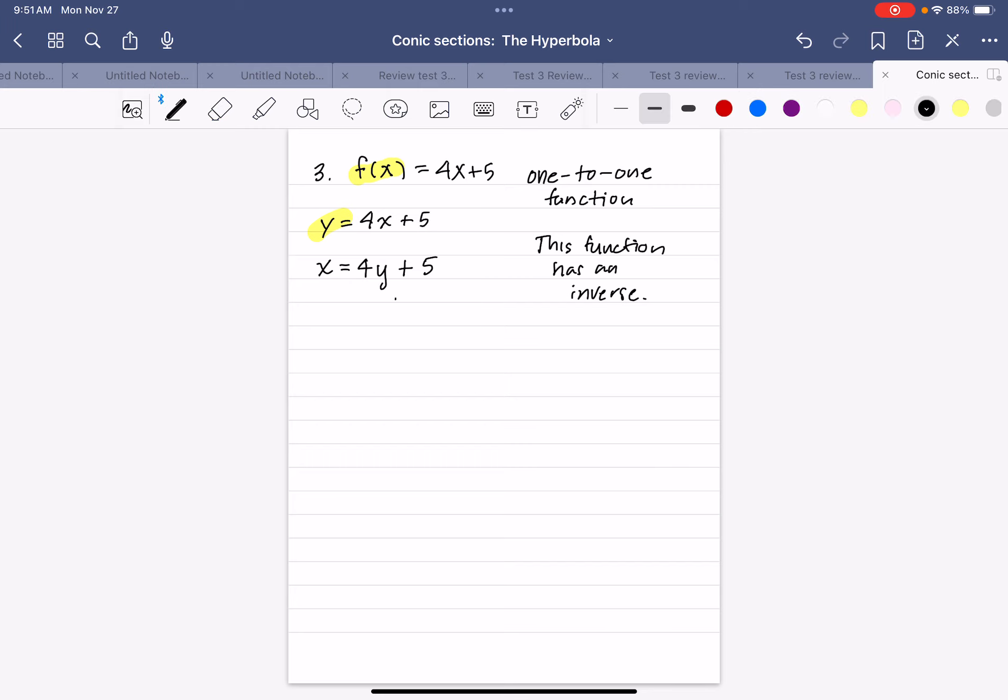Now I'm going to solve for y by subtracting 5, and then I get x - 5 = 4y. I still need y by itself, so divide by 4. So (x - 5)/4 = y.